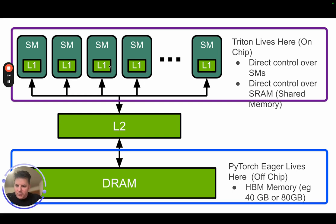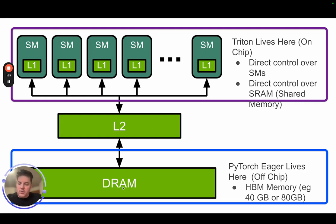The problem is this data movement between global memory and the SMs is very bandwidth constrained — that's actually one of the biggest problems in GPU programming. By contrast, with Triton, if we know we're going to get both milk and tea, we can go from home to the store, get the milk and tea, and then bring everything back — avoiding a duplicate round trip for no reason. That would be a very simplistic example of a fusion kernel.